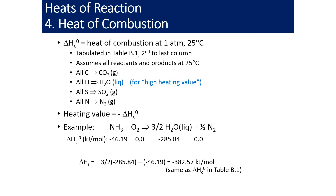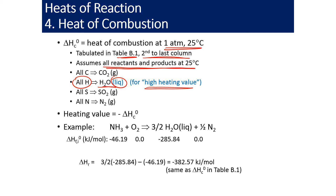Let's look at the heat of combustion. These are often reported at 1 atmosphere and 25 degrees Celsius — there's a table in the back of the book, in the second-to-last column. It assumes all reactants and products are also at 25 degrees Celsius. One thing to note: all hydrogen goes to water. If it goes to liquid water, we call that the higher heating value or high heating value. If it goes to vapor, it's the low heating value. You can extract more energy if the water condenses versus if it doesn't.